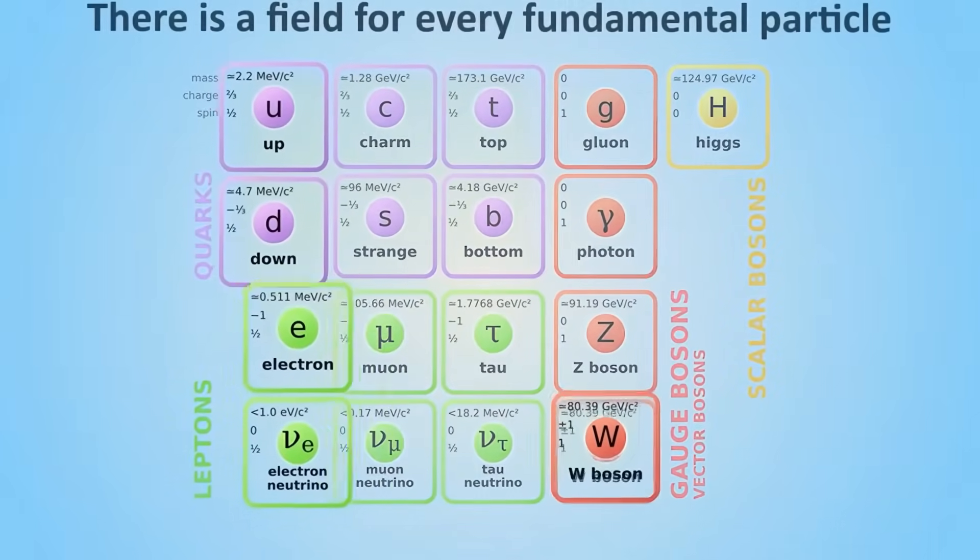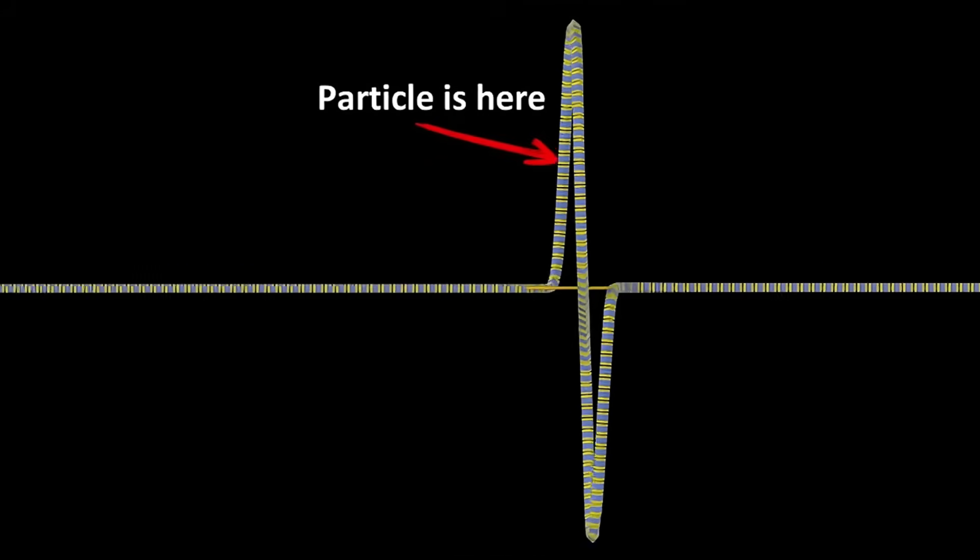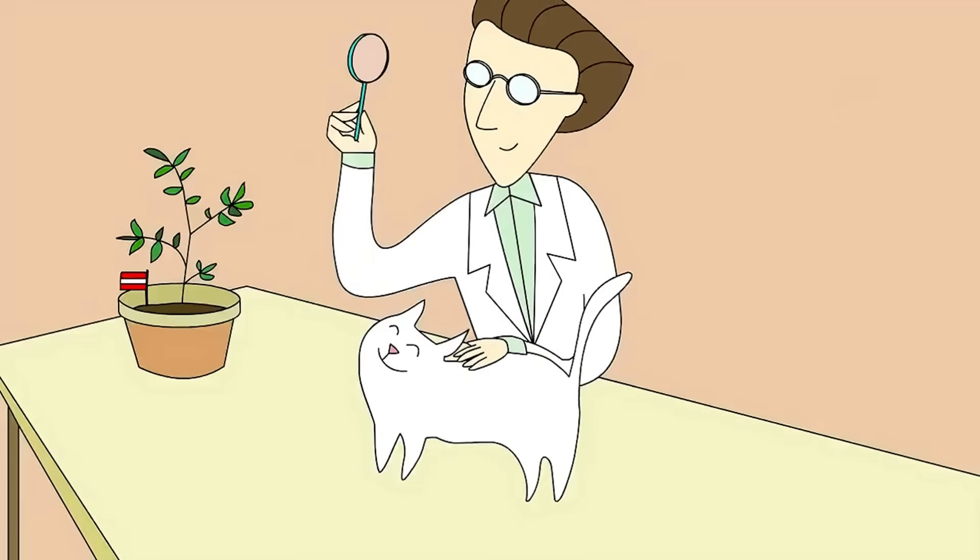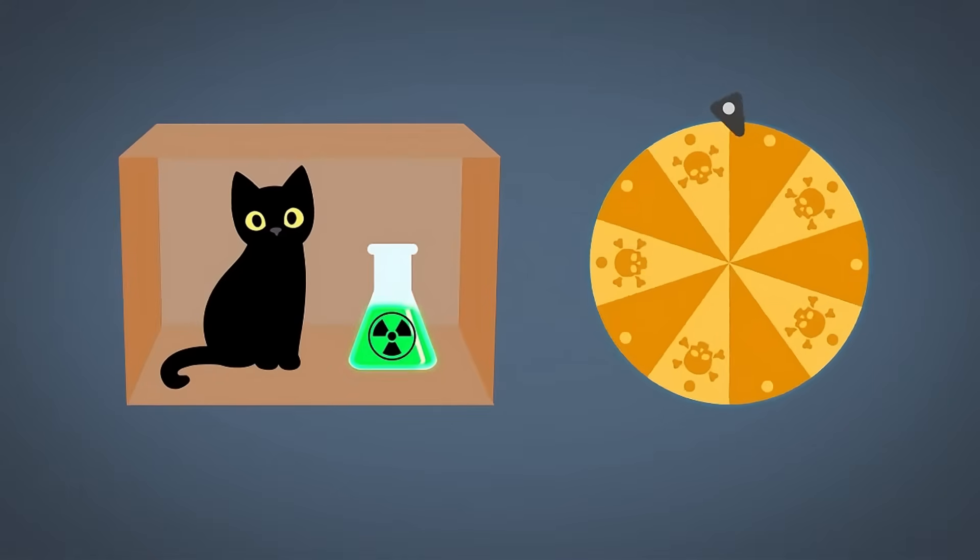First, superposition. A quantum particle doesn't have a definite state until measured. It exists in a cloud of probabilities. Schrodinger's cat famously illustrates this—alive and dead until observed.